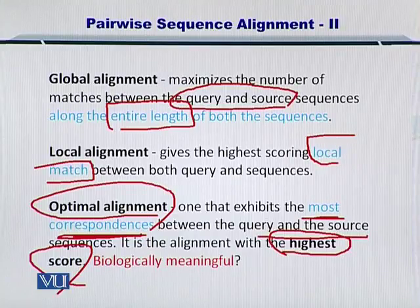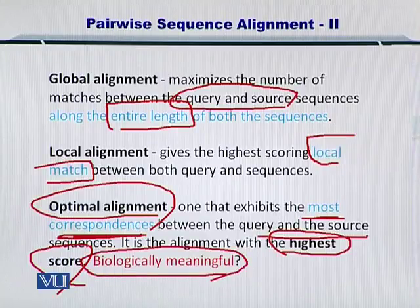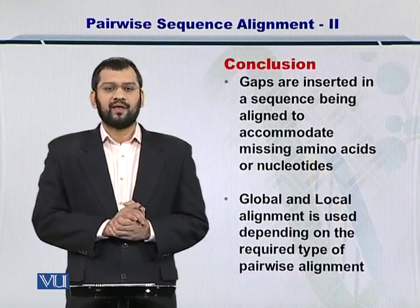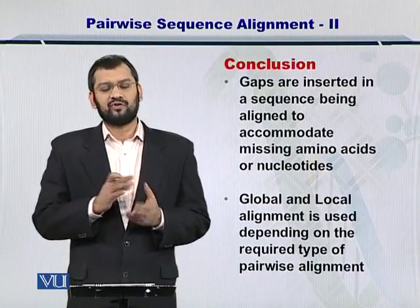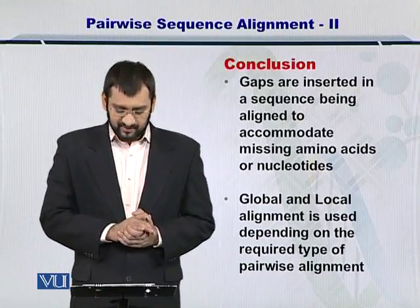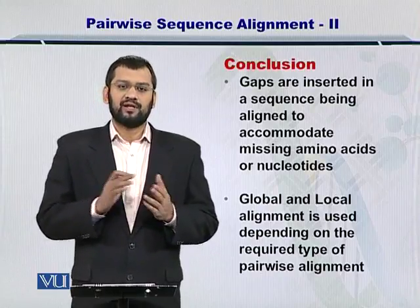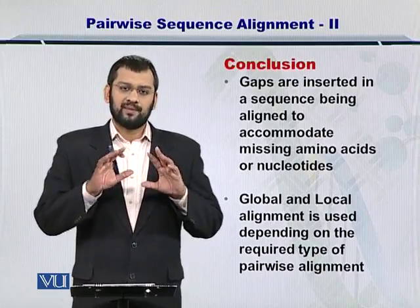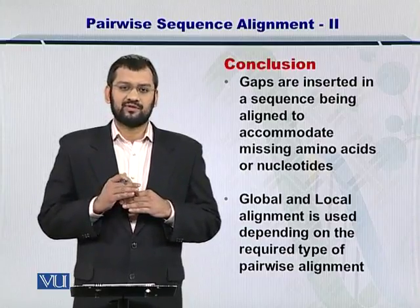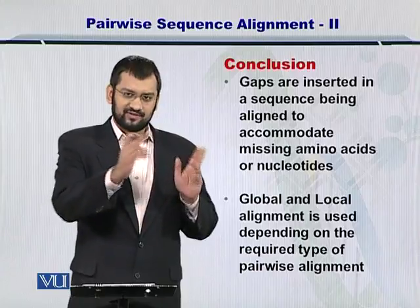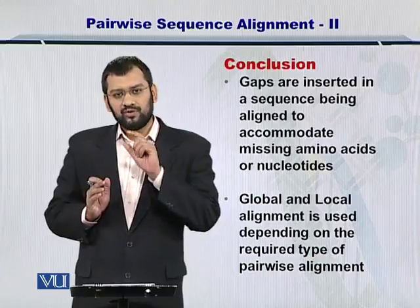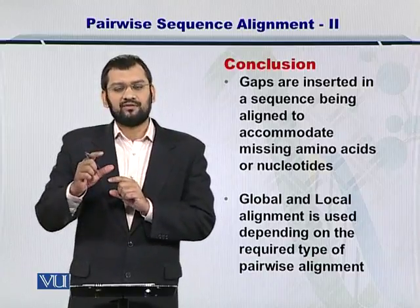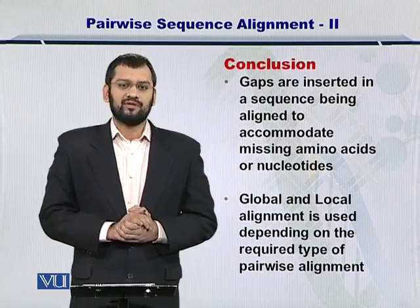It is important to note that such a highest-scoring alignment may not be biologically meaningful. In conclusion, gaps are inserted to accommodate insertions and deletions of nucleotides or amino acids from sequences during the evolutionary process. Global and local alignments are used depending on our objective: if comparing entire sequences, we use global alignment; if comparing only portions of sequences, we use local sequence alignment.